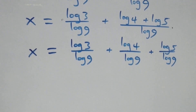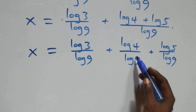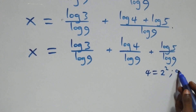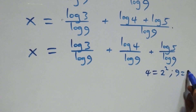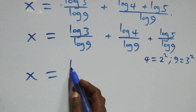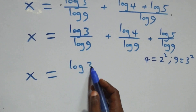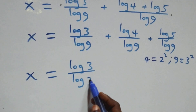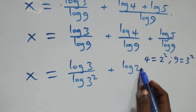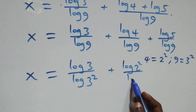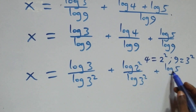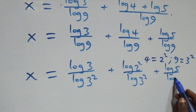Now we express 4 as 2 squared and 9 as 3 squared. So x equals log 3 over log(3 squared), plus log(2 squared) over log(3 squared), plus log 5 over log(3 squared).